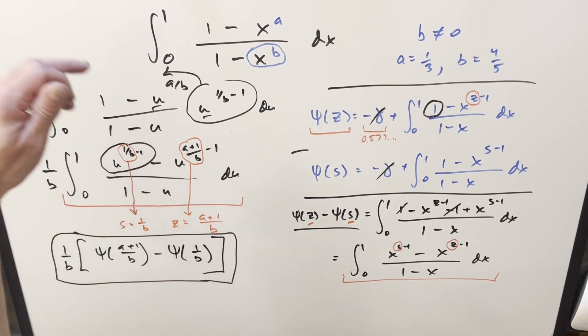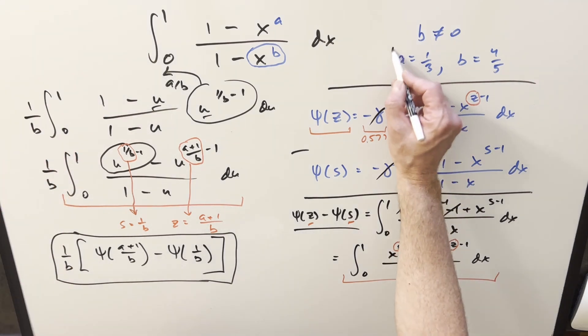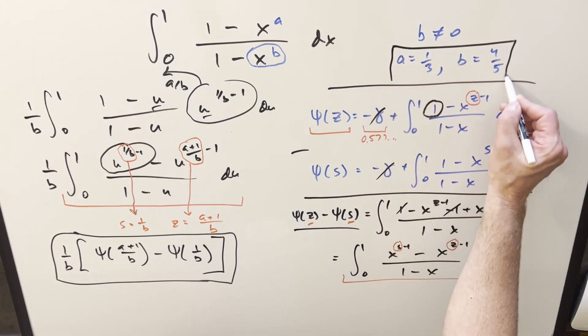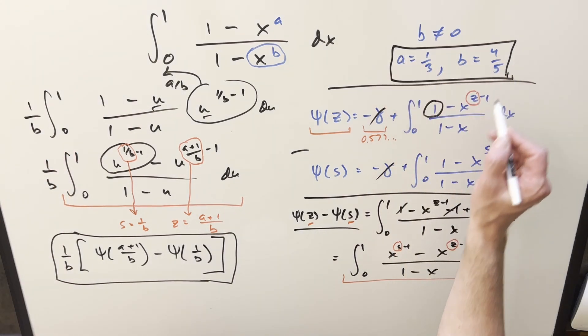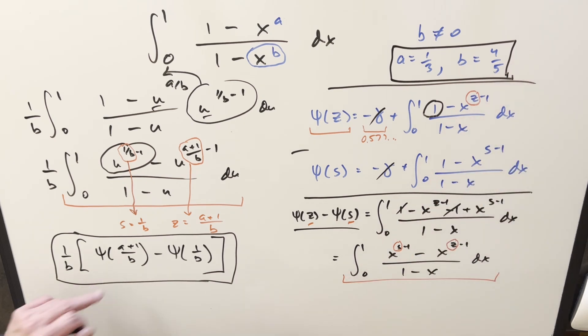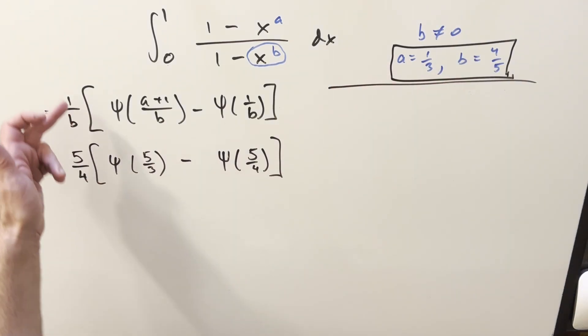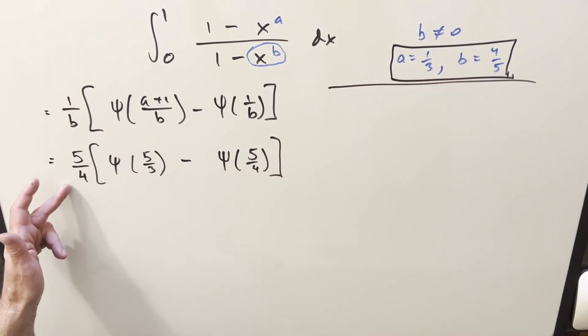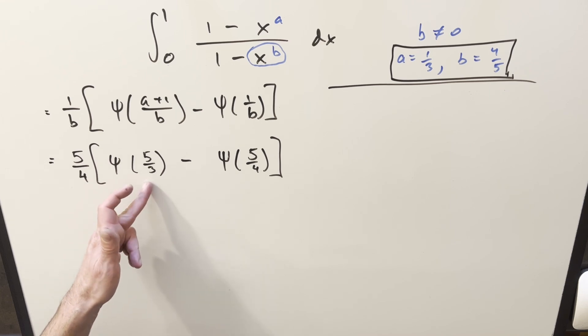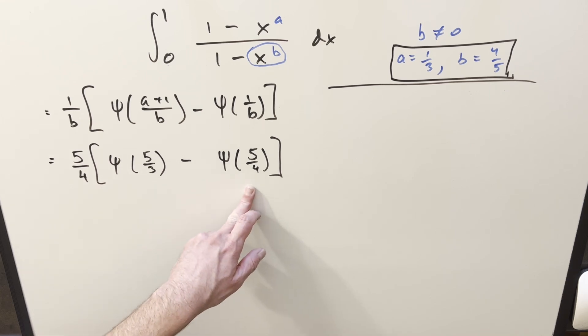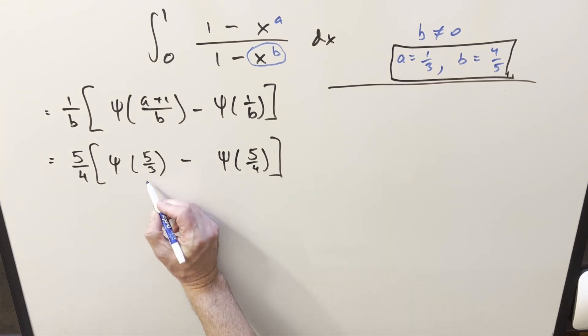So now we just need to get back to our problem, which is solving this integral when the a value and b value is 1/3 and 4/5. So let me clean up the board. All we really need to do is plug into this, but we also have to reduce because we still have it here in terms of the digamma function. Okay, now after we plug in our a and b values into this formula here, I end up with 5/4, digamma of 5/3 minus digamma of 5/4.